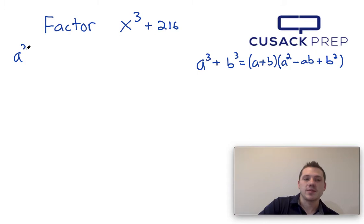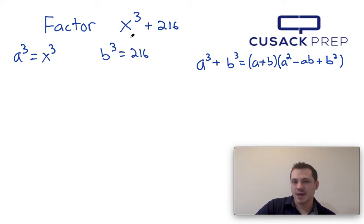Now a cubed must equal x cubed, and b cubed must equal 216, and I can see that by comparing the locations of x cubed and a cubed, as well as 216 and b cubed, so where they appear respective to each other in each equation.